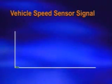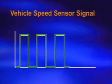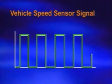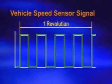The sensor generates four pulses with one rotation. The ECM calculates the vehicle speed by counting the number of pulses per second.